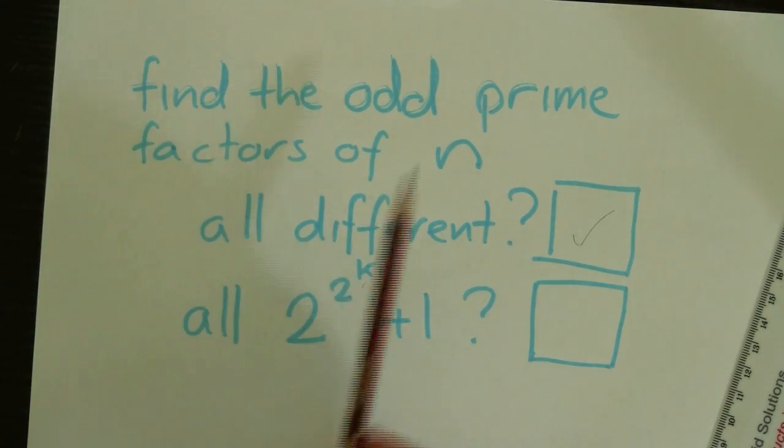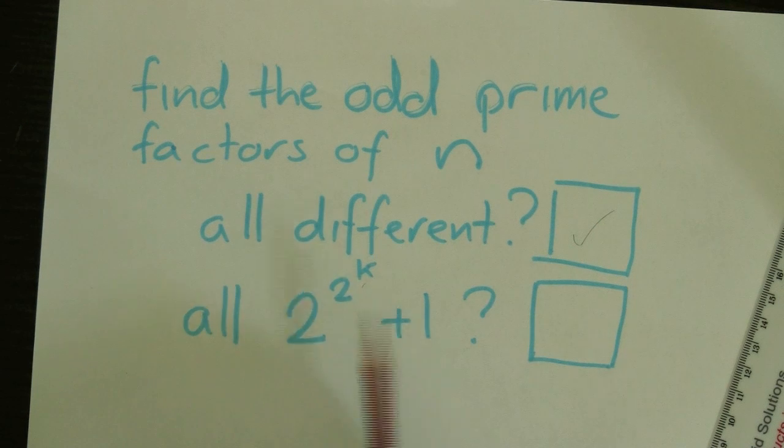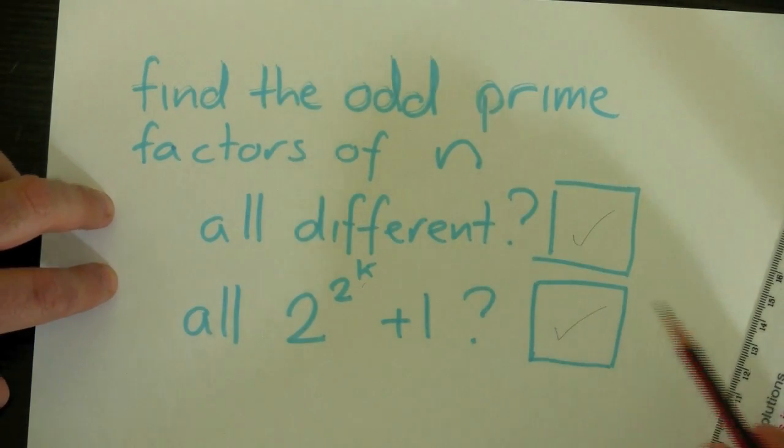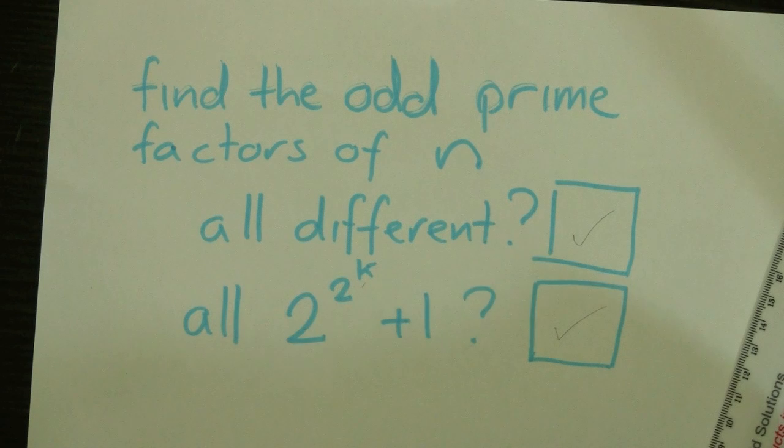And you ask if all of these odd prime factors are powers of 2 plus 1. Well, 3 is 2 plus 1, and 2 is a power of 2. So sure enough, 6 passes this test, and so we can construct a regular hexagon using a ruler and a compass.